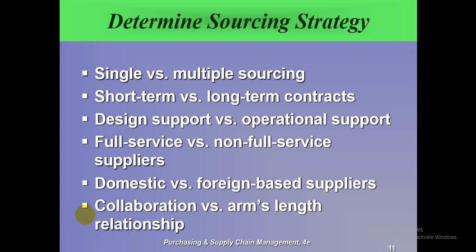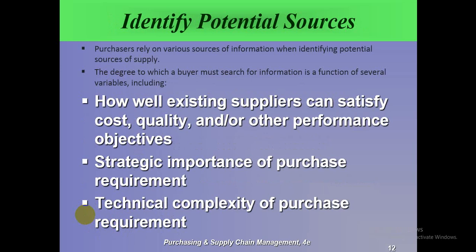The fourth step is to identify potential supply sources. Purchasers rely on various sources of information when identifying potential suppliers. The degree to which a buyer must search for information is a function of several variables, including how well existing suppliers can satisfy cost, quality, and other performance objectives.